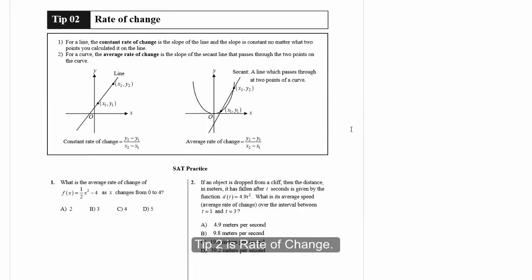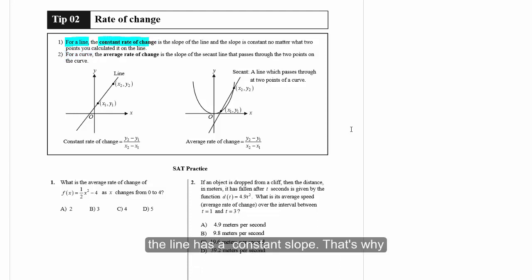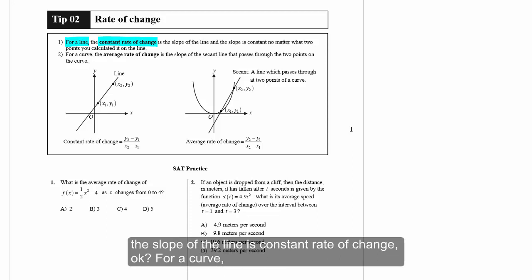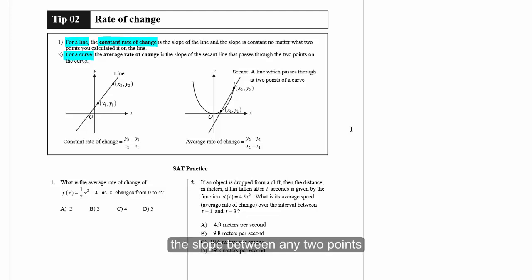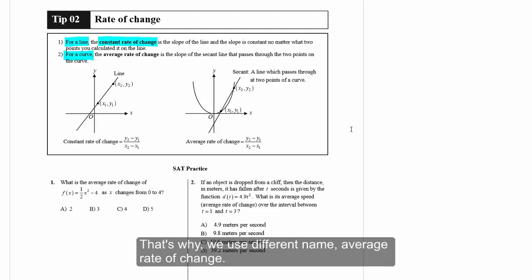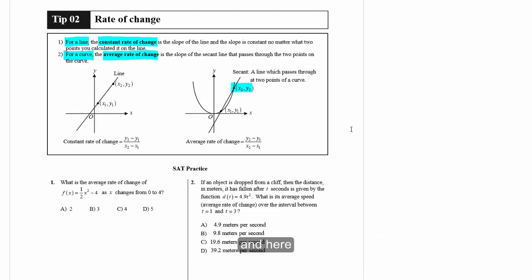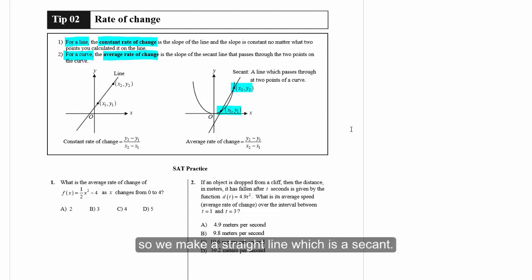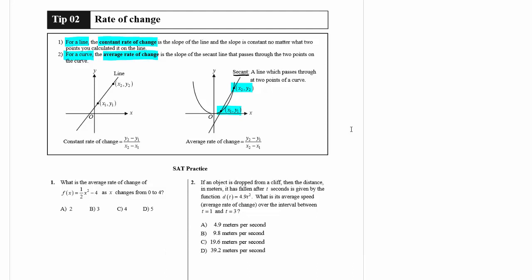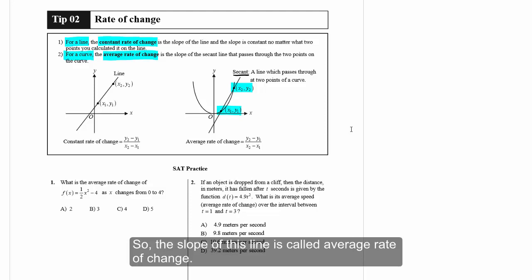Now tip two is rate of change. A line has a constant slope, so the rate of change is constant. The slope of a line is the constant rate of change. For a curve, the slope between any two points will be different. So we use average rate of change. When you choose two points on the curve and draw a straight line through them, that line is called a secant, and the slope of the secant is called the average rate of change.